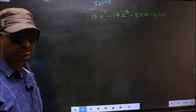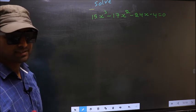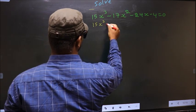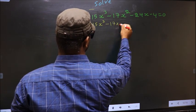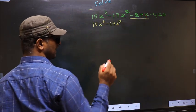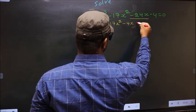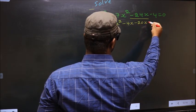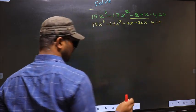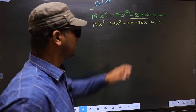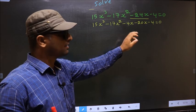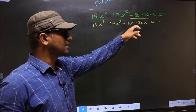For that, we have to change the x term. That is: 15x³ minus 17x² — in place of minus 24x, now I write minus 4x minus 20x minus 4 equal to 0. In place of minus 24x, I have written minus 4x minus 20x.